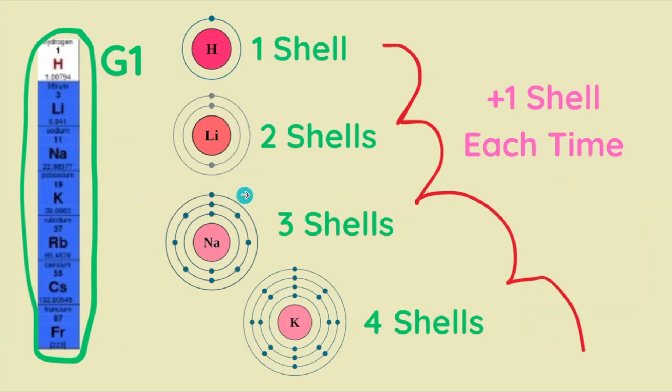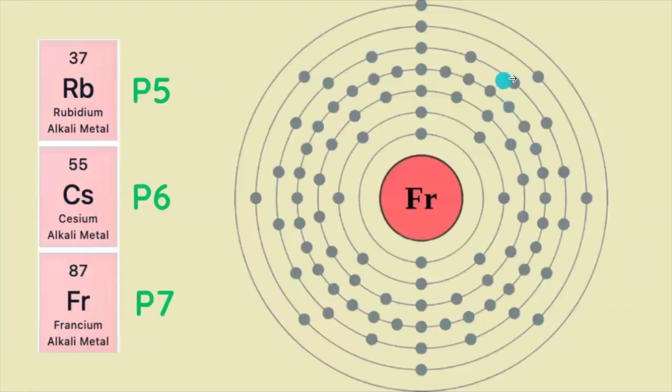lithium has two shells, sodium has three. We keep adding electron shells as we descend down the periodic table until we get down to the seventh period where there are seven shells of electrons. And you can see that with francium, there's a ton of separation between the nucleus and the outermost electron.